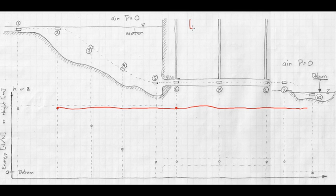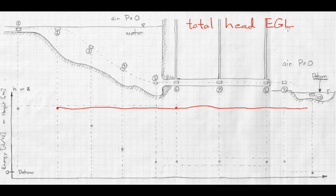The total energy, or total head — because we're expressing it in elevation units — is in joules per newton, or just meters. This is called the total head or energy grade line. Because we're not allowing for any friction, it remains constant all the way across.